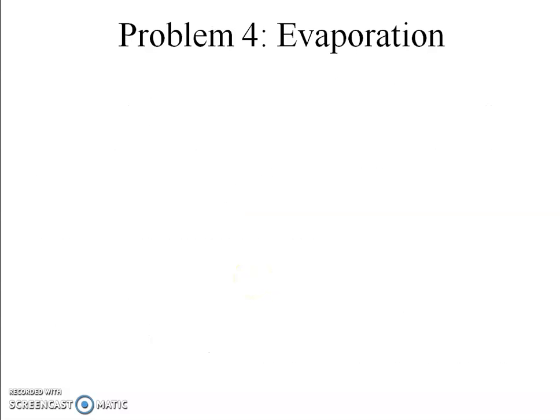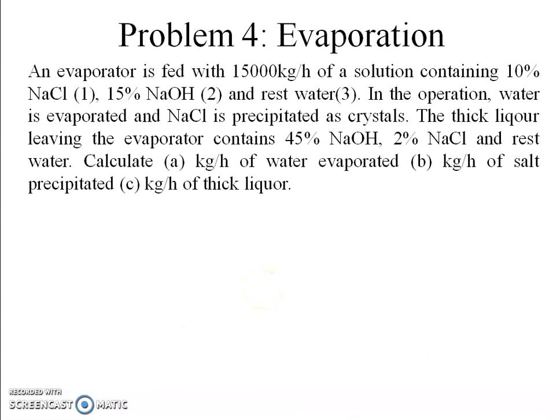Now the next problem is on evaporation. The problem states: an evaporator is fed with 15,000 kg per hour of solution with composition 10% NaCl, 15% NaOH, and the rest water. In this evaporation process, water is evaporated, NaCl precipitates as crystals, and we are interested in the thick liquor leaving the evaporator which contains 45% NaOH, 2% NaCl, and the rest water. We need to calculate how much water is evaporated, how much salt precipitates, and the amount of thick liquor coming out per hour.